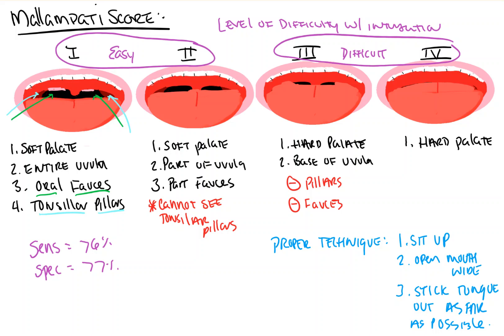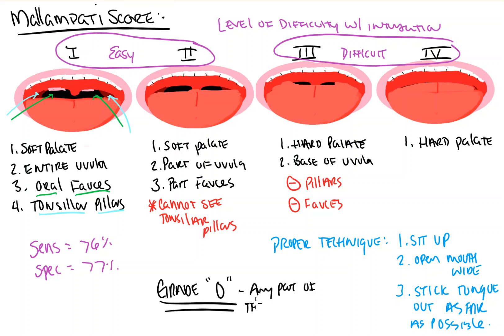There actually is a Malampati Grade 0 that many people don't discuss, and most of the time it's seen in children. A Grade 0 view is one in which the practitioner can actually see any part of the epiglottis when doing this maneuver. Overall, the Malampati is a good score at predicting easy intubations, but may be limited in predicting difficult ones. There are other scores out there for evaluating the airway that should also be considered when checking a patient's airway.